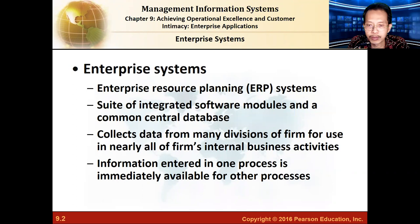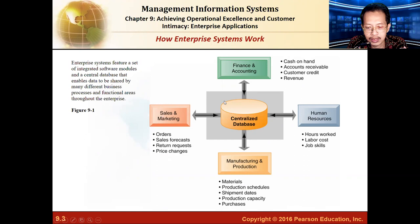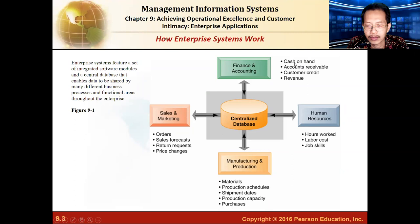The centralized database stores information from different divisions. The sales and marketing division has systems managing orders, sales forecasting, return requests, and price changes. Data from these functions goes into the central database and becomes accessible by the finance and accounting division. For instance, when a customer places and pays for an order, the data goes directly to the finance department so they can update how much cash they have on hand, how much customer credit is available, and how much revenue is available.